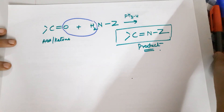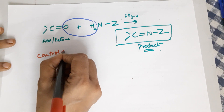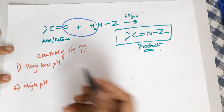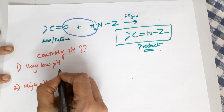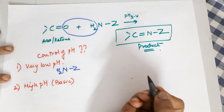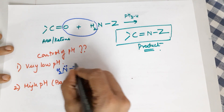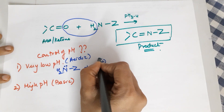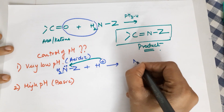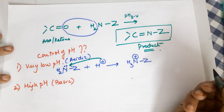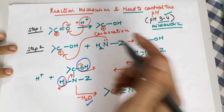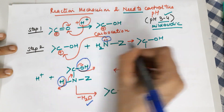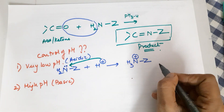Now the important thing from the mechanism is the control of pH. We could either have a low pH (highly acidic) or a high pH (basic). If the medium is highly acidic, the proton from the acidic medium will attack the lone pair of your ammonia derivative, leaving no lone pair available to attack the carbocation. So step 2 won't happen — that is the first reason why you cannot have a very low pH.